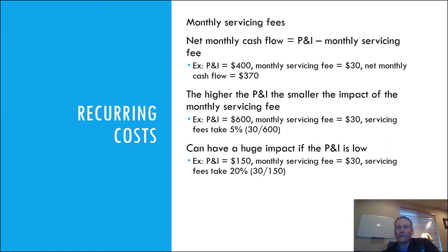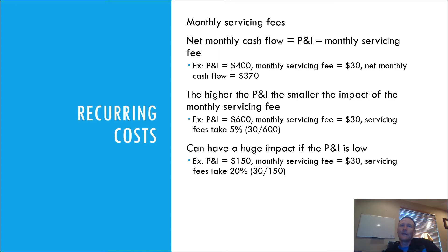We also have recurring costs every month — namely the monthly servicing fees. When we look at our net monthly cash flow, we really care about the P&I payment on the loan minus the monthly servicing fees. So if it's a $400 P&I payment and we're paying $30 a month for servicing, our net cash flow in is going to be $370 a month. When calculating our yield, we want to use $370, not $400 — otherwise we're going to overestimate the yield.